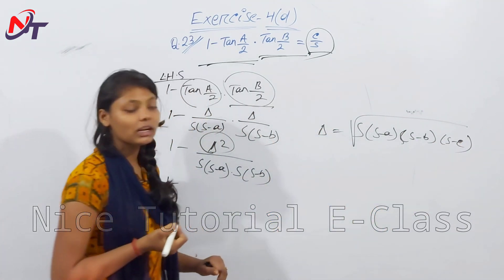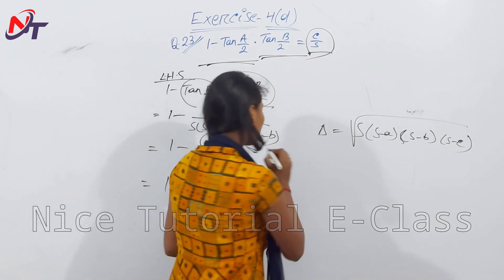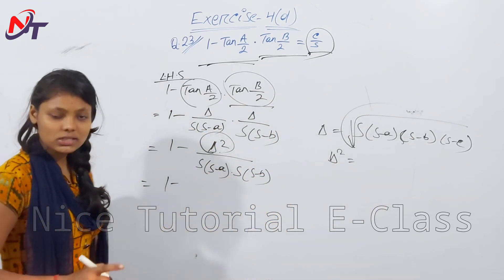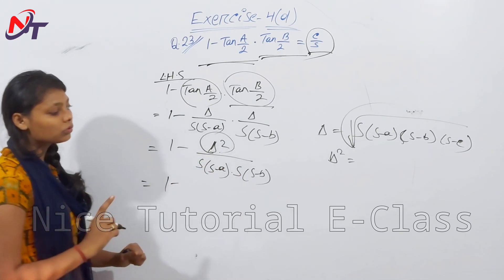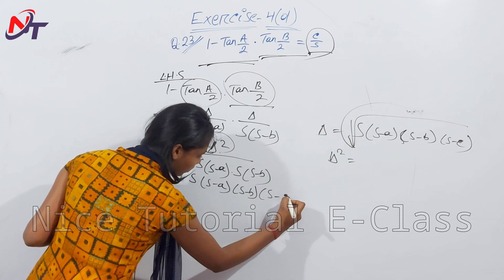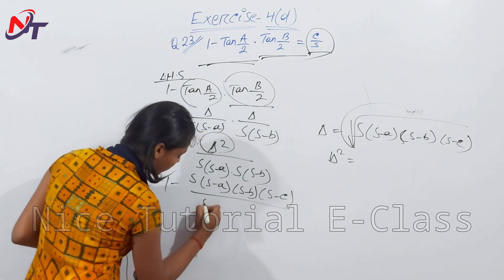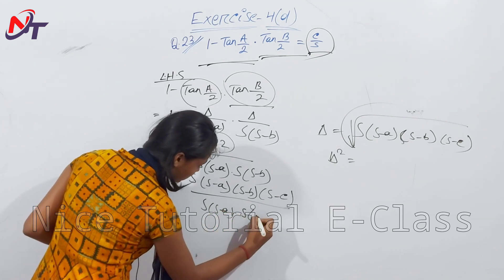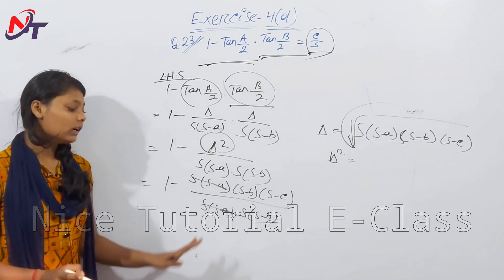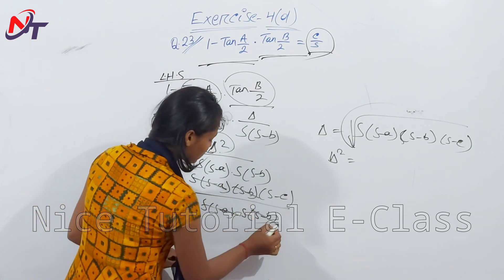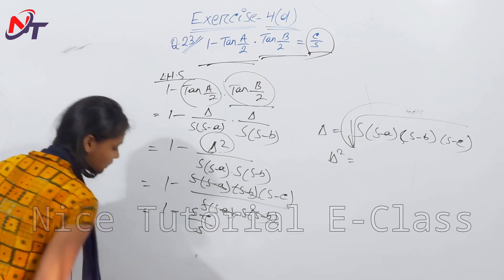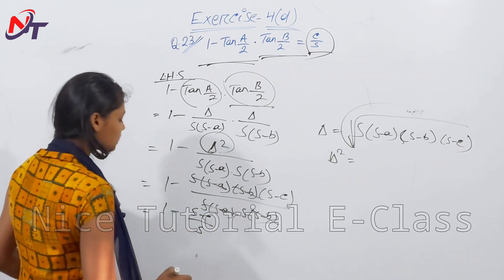So Δ² = s(s-a)(s-b)(s-c). After substitution, s(s-a) and s(s-b) terms cancel where multiplied and divided. Then s(s-b) cancels, leaving: 1 - (s-c)/s.